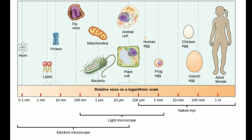This picture depicts cell sizes on a logarithmic scale. Cells can be seen through the naked eye, light microscope, or electron microscope. For example, ostrich eggs and chicken eggs can be seen with the naked eye; plant cells and animal cells can be seen through a light microscope; flu viruses, proteins, and subcellular organelles require an electron microscope.